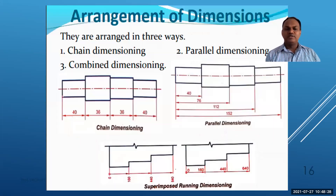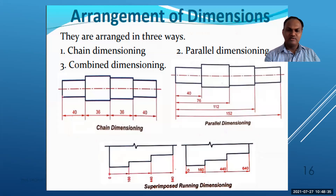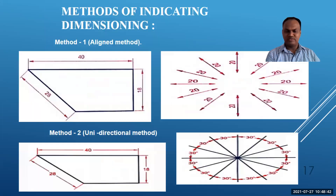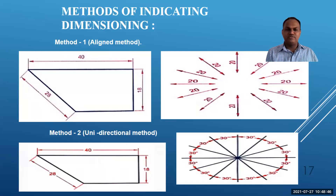For arrangement of dimensioning, we have seen chain dimensioning and parallel dimensioning methods; a combined dimensioning method can also be used depending on the available space. The two methods of indicating dimensions are the aligned method and the unidirectional method.